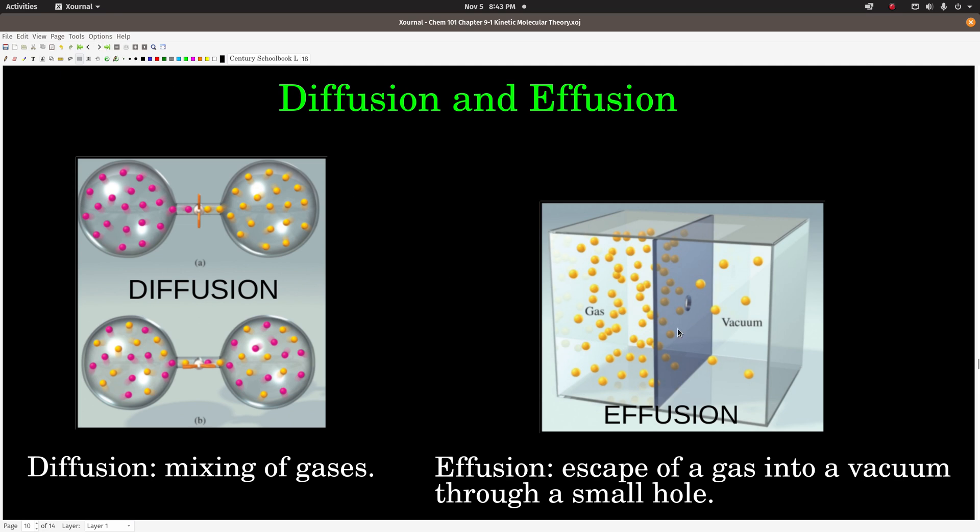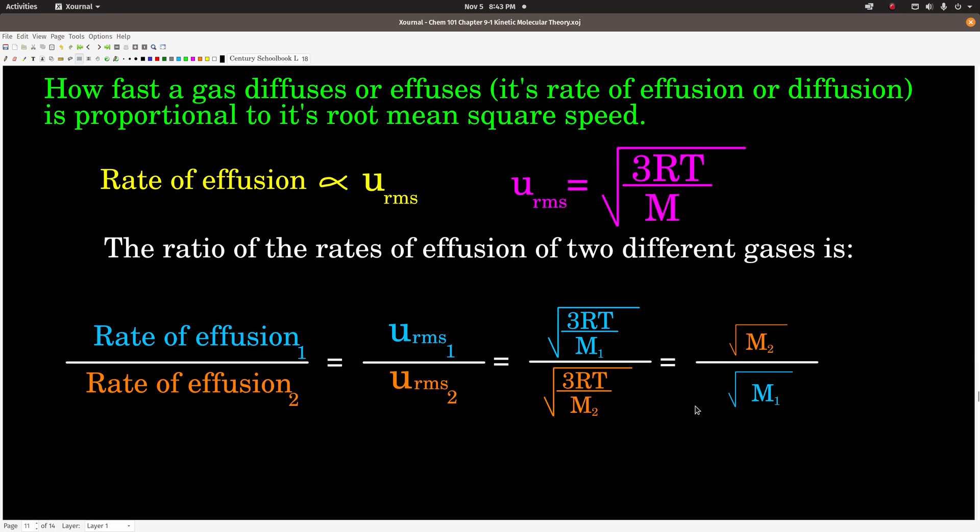This is pretty useful. They used this to separate isotopes of uranium, like having a long chain of effusion chambers, because the isotopes have different masses so they effuse at different rates.